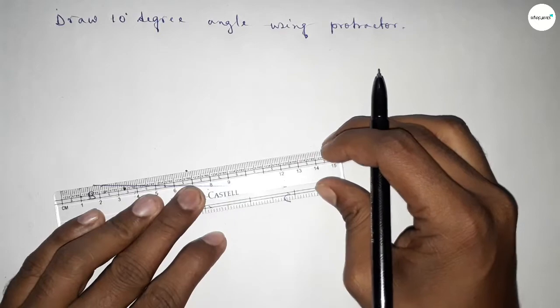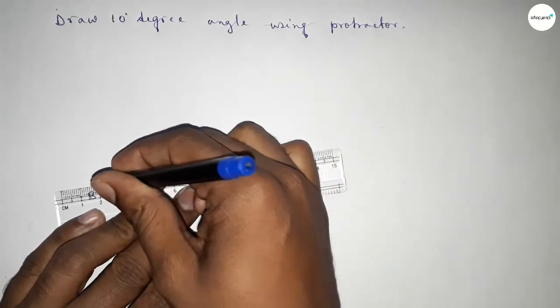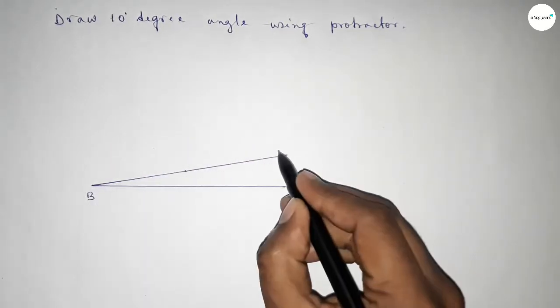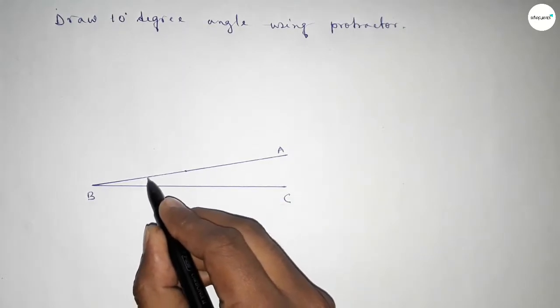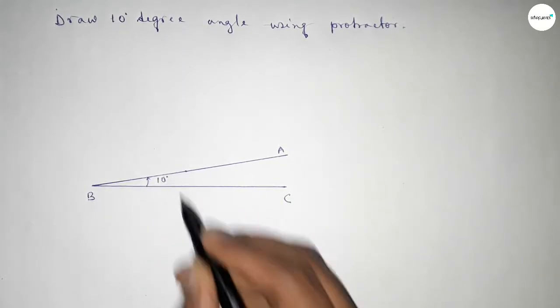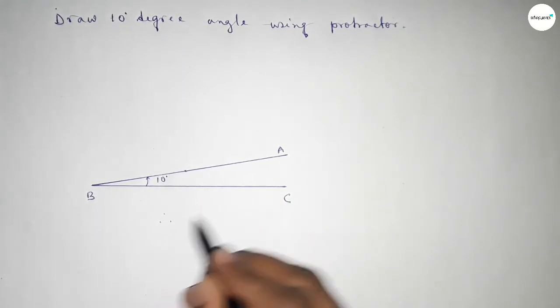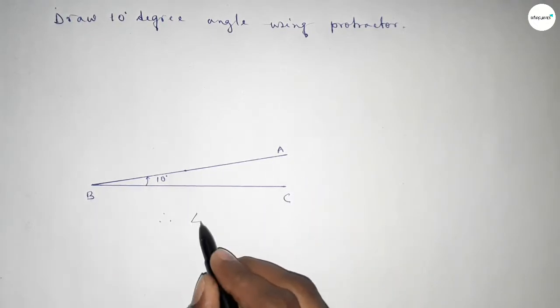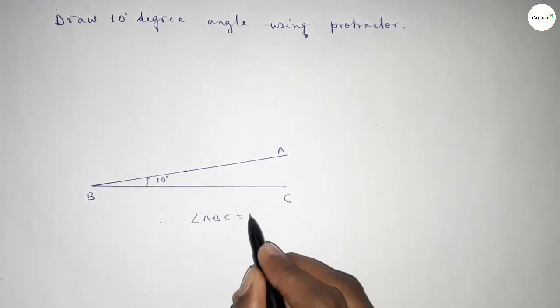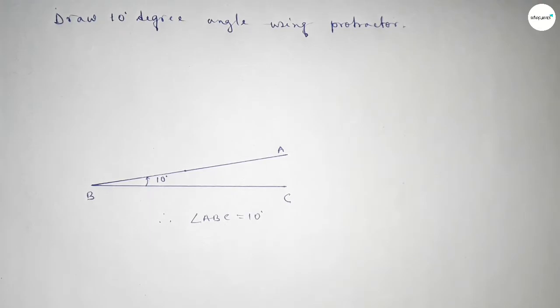Now joining this side to get a 10 degree angle and taking here point A. So angle ABC, this is 10 degrees. Therefore, angle ABC equals 10 degrees.